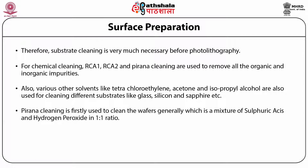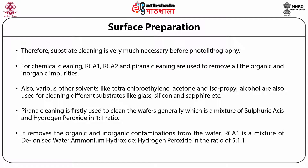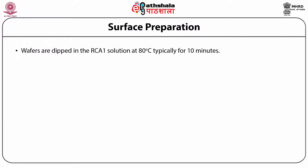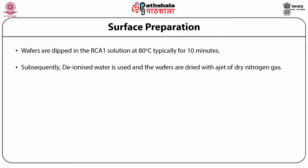Piranha cleaning is first used to clean the wafers. It is a mixture of sulfuric acid and hydrogen peroxide in a 1:1 ratio and removes organic and inorganic contaminations from the wafer. RCA1 is a mixture of deionized water, ammonium hydroxide, and hydrogen peroxide in the ratio of 5:1:1. Wafers are dipped in the RCA1 solution at 80 degrees Celsius typically for 10 minutes. RCA1 cleaning helps remove organic residues and is very effective in removing particles from the surface. Subsequently, deionized water is used and the wafers are dried with a jet of dry nitrogen gas.